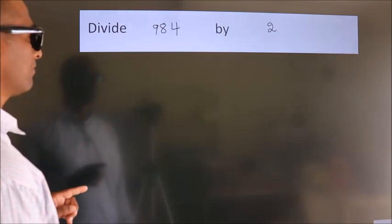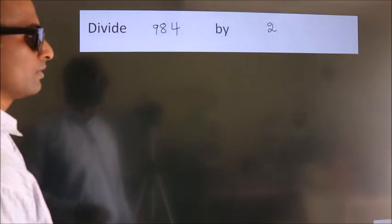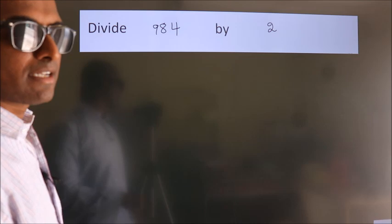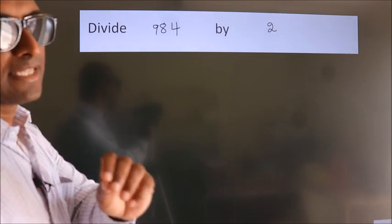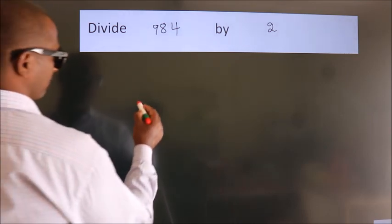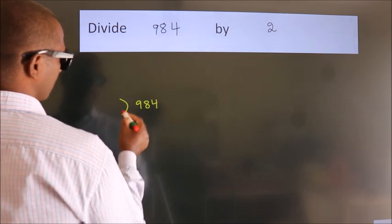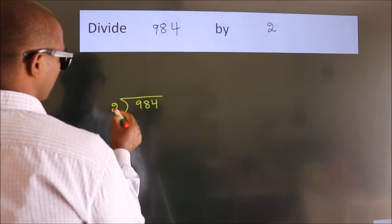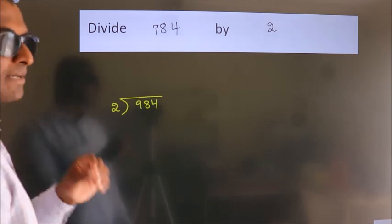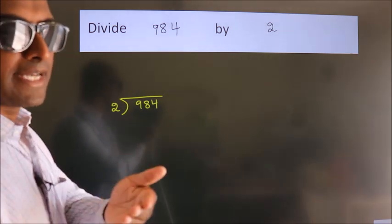Divide 984 by 2. To do this division, we should frame it in this way. 984 here, 2 here. This is your step 1. Next,